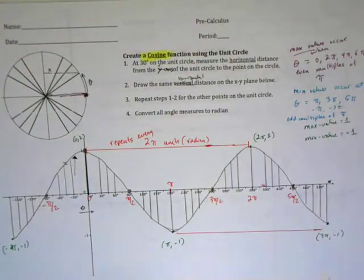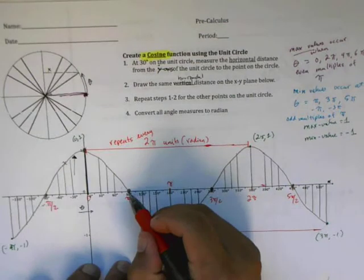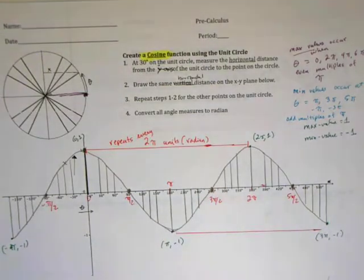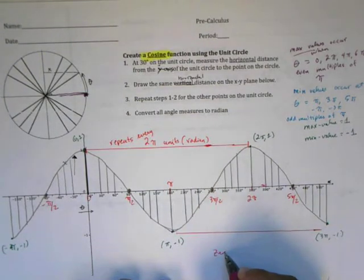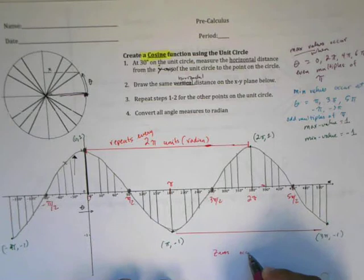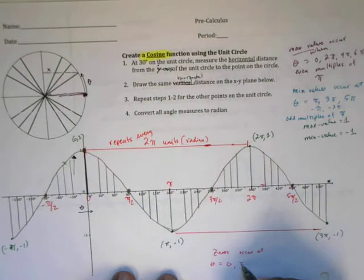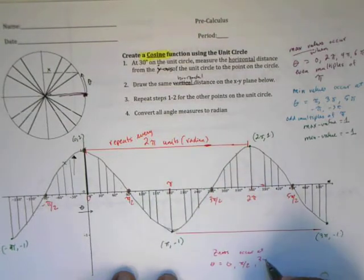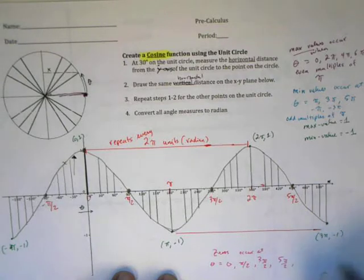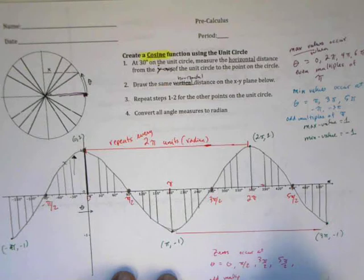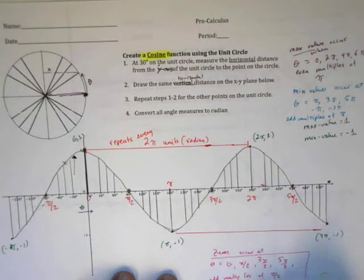Finally, let's look at the zeros. Where do the zeros occur? Well, it occurs at π/2. So we can say that zeros occur where theta is equal to π/2, 3π/2, 5π/2, and so on, or we can say that this is odd multiples of π/2. So this is where the zeros occur.